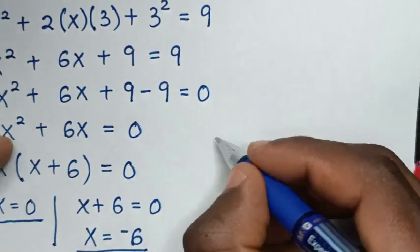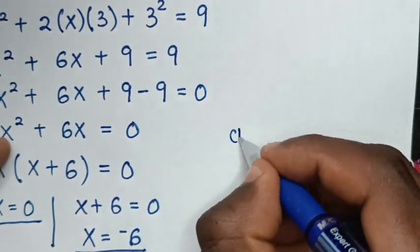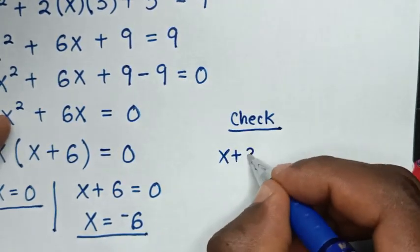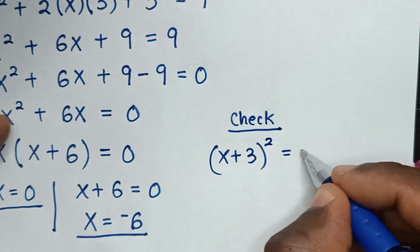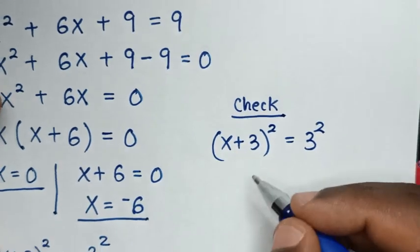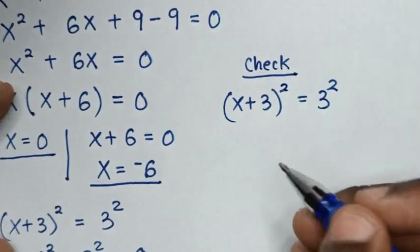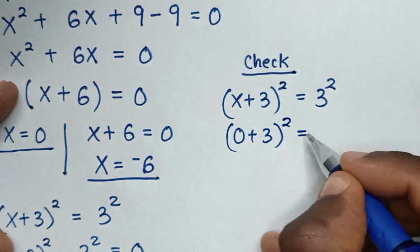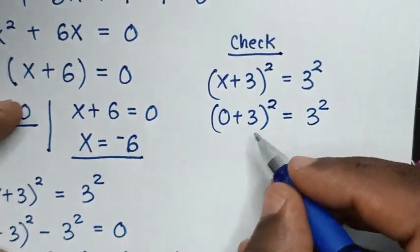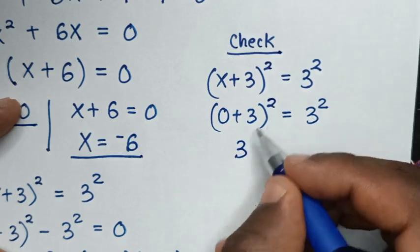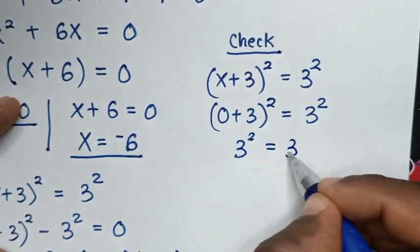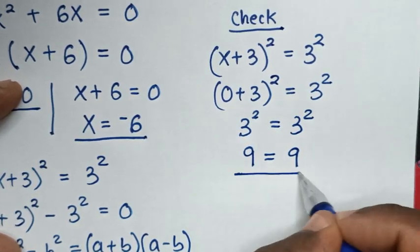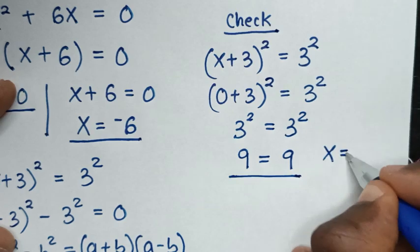Now let's check by substituting back into the original problem (x + 3)² = 3². For x = 0: (0 + 3)² = 3², which gives 3² = 3², that is 9 = 9. Left side and right side are equal, so it is true for x = 0.